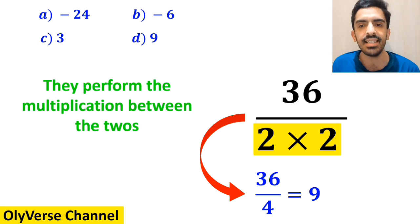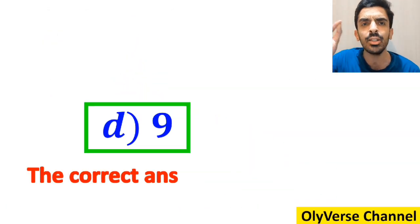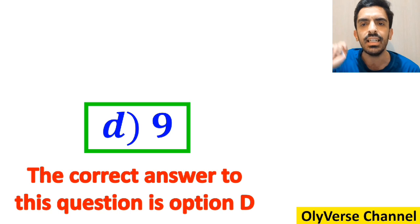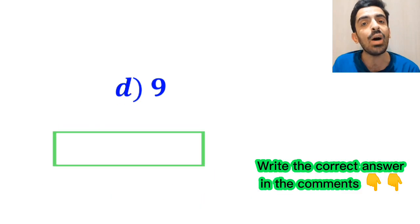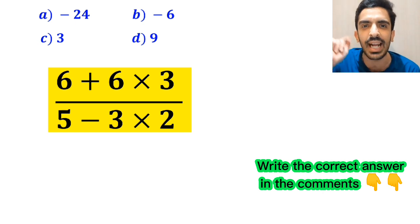Then, without any hesitation, they quickly say that the correct answer to this question is option D. However, that's definitely wrong. Now, let me explain step-by-step how to solve this expression correctly.